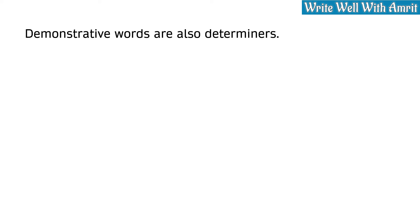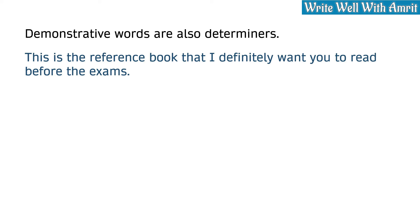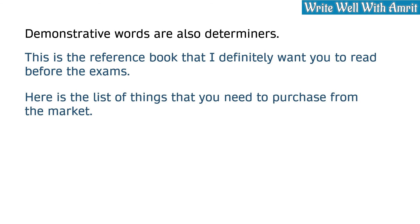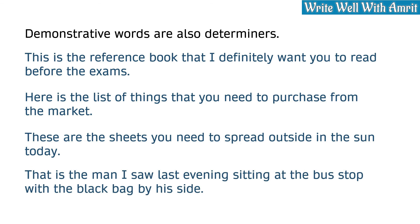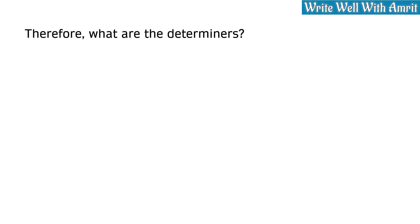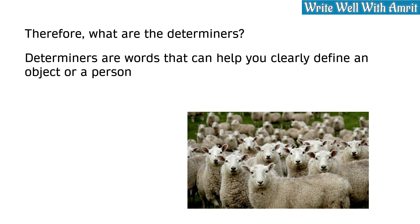Demonstrative words are also determiners. For example: 'This is the reference book that I definitely want you to read before the exams.' 'These are the sheets that you need to spread outside in the sun today.' 'That is the man I saw last evening sitting at the bus stop with the black bag by his side.' Hence, there can be many words that help you clearly define an object or a person, and these words are called determiners in English grammar.